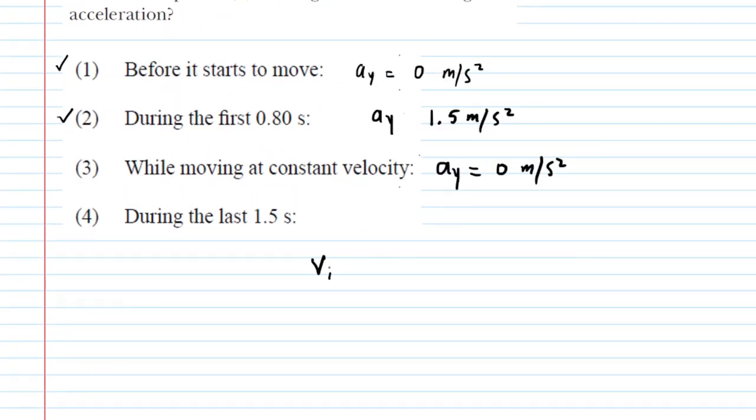In this case, the initial velocity was that maximum velocity that it had attained earlier, so it's the 1.2 meters per second. The final velocity would be 0 meters per second because the elevator comes to rest. The time interval was the one and a half seconds, and then the acceleration will be calculated exactly as we did it earlier.